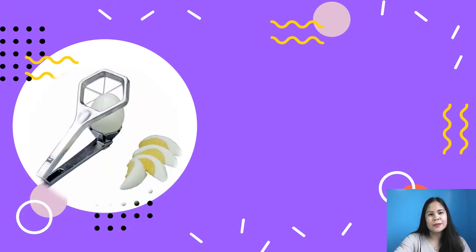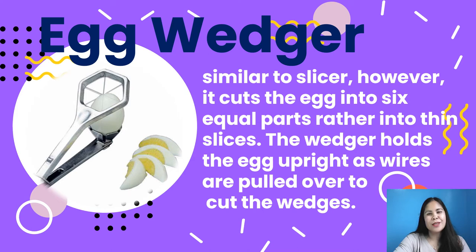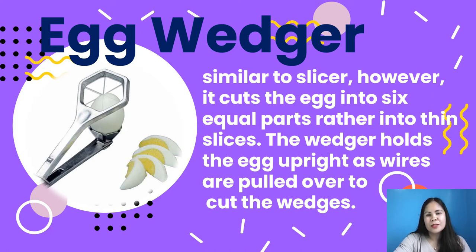Another tool is an egg wedger — similar to a slicer, however it cuts the egg into six equal parts rather than thin slices. The wedger holds the egg upright as wires are pulled over to cut the wedges. Designed to cut eggs into six perfectly even slices, the wedger helps improve your presentation and reduce preparation times.